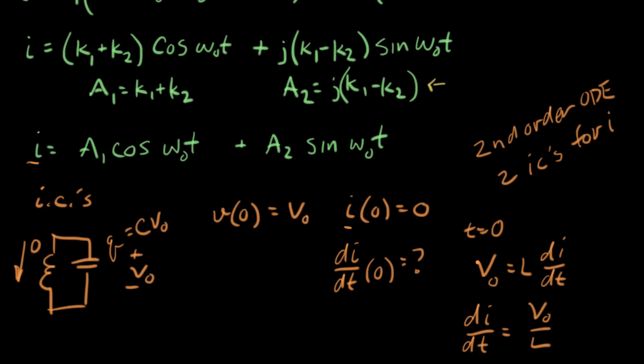So now I have two initial conditions in terms of I. There's one, and there's one there. And we can use these now to go after A1 and A2.